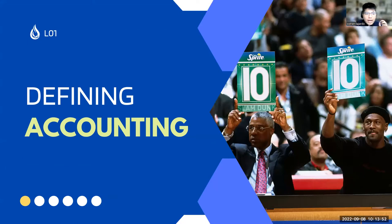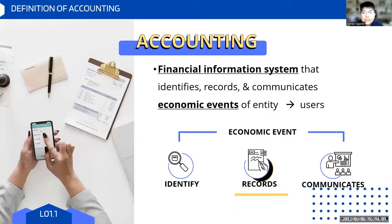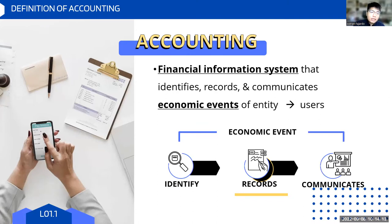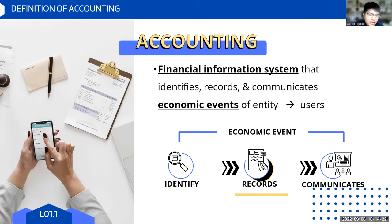Now that we're aligned on the lecture overview, let's begin with learning objective one. At the start of accounting 101, we need to know: what is accounting? According to Weygandt, accounting is a financial information system that does three things: it identifies, records, and communicates economic events of a business entity so that it can communicate to users for decision making. Let's break it down into three major parts.